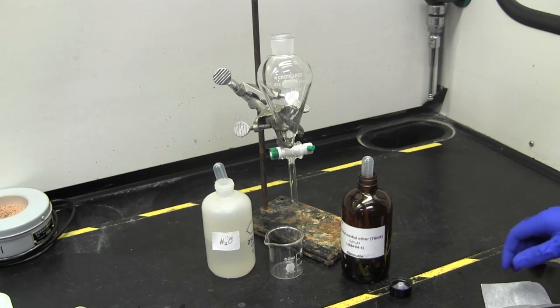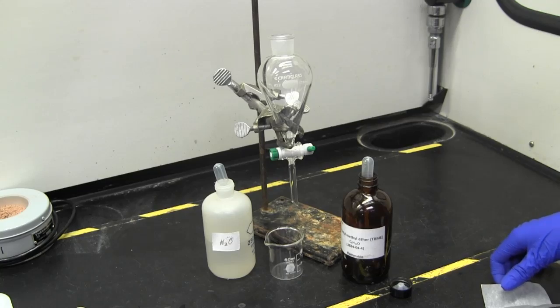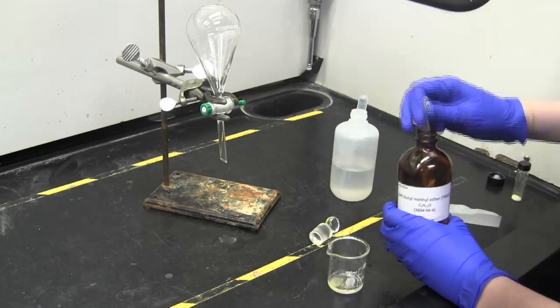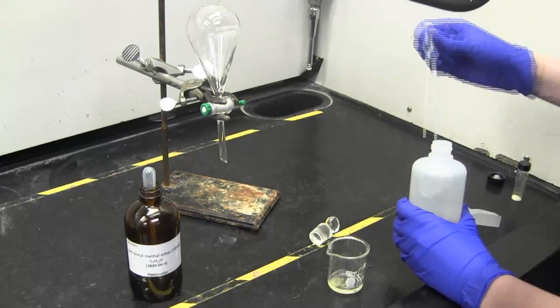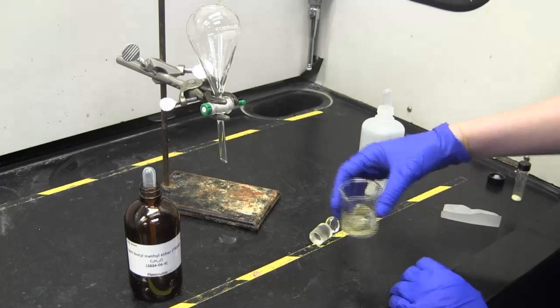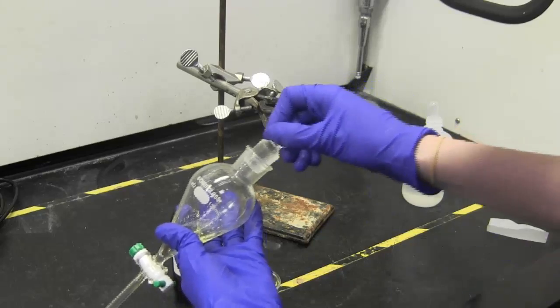For the large-scale method, you will use a separation funnel. First, check to see that the stopcock on the bottom of the funnel is closed. Then dissolve your unknown in the appropriate solvent. Pour the unknown solution into the funnel and place a stopper in the top of the separation funnel to prevent leaking.